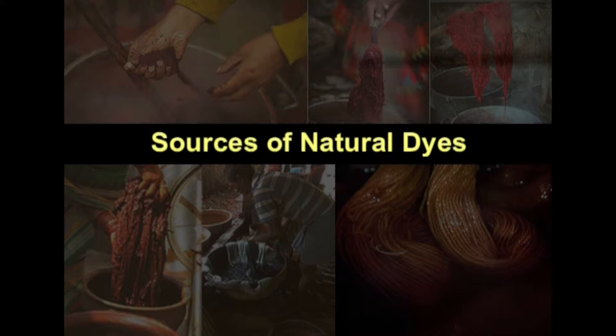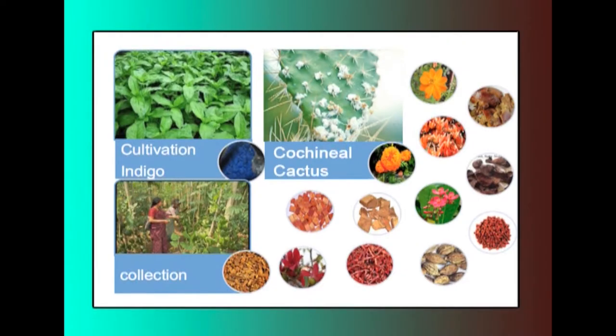As far as natural dye sources are concerned, India had a virtual monopoly in their production and applications. Around 500 plants can give rise to natural colors. Few animal and mineral sources were also known to produce very striking colors. Natural dyes are extracted from the roots, stems, leaves, flowers, and fruits of various plants, as well as from the dried bodies of certain insects and from minerals.